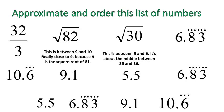Now remember, these 5.5 and 9.1s, those are approximate guesses. So if I wanted to fully put them in order, I'd probably rewrite them as the square root of 30, 6.83 repeating, the square root of 82, and 32 over 3. If I wanted to write them all in their most true correct form.